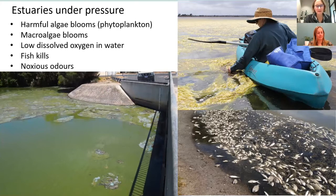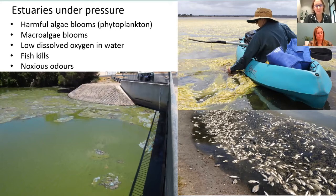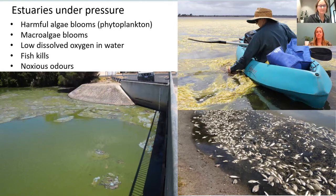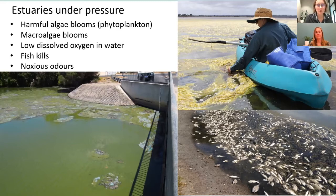One of the problems with these organisms, as well as looking unsightly, is that when they die they break down and the breakdown consumes oxygen, stripping oxygen from the water and making it very hard for aquatic organisms to survive. The Vasse Wonnerup has suffered from seven fish kills in the last 10 years, which shows that the estuary's water quality is inadequate for supporting healthy fish life at certain times. The best way to try to resolve these issues as a management agency is to understand how the estuaries work.